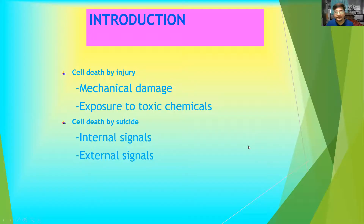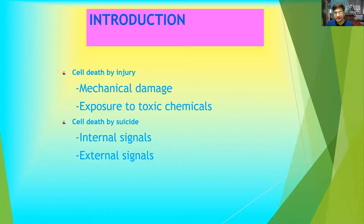Cell death could happen because of injuries, mechanical damage, or exposure to toxic chemicals, which comes under necrosis. Whereas a cell can also die by committing suicide — it will get signals both internal as well as external.